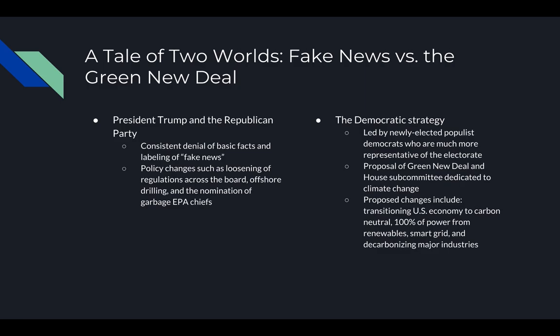On the other hand, new Democratic representatives such as Alexandria Ocasio-Cortez from New York are fighting for environmental politics with their own agenda. She and others have proposed the Green New Deal, which includes many environmental protections such as transitioning the U.S. economy to carbon neutral, achieving 100% of power generation from renewable sources, building a smart grid, decarbonizing major industries including agriculture, transportation, and manufacturing, and making the United States the largest exporter of green technology.